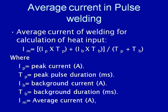Here Ip is the peak current in amperes, Tp is the peak current duration in milliseconds, Ib is the background current in amperes, Tb is the background duration in milliseconds, and Im is the mean or average current in amperes. This equation can be used for determining the average current so as to calculate the heat being generated during welding when the current is pulsing between the base current and the peak current.